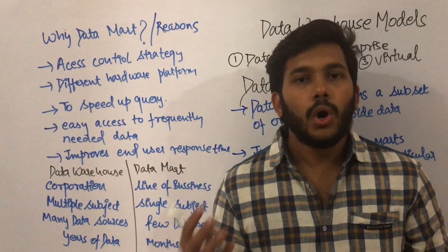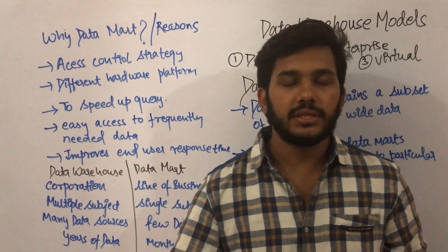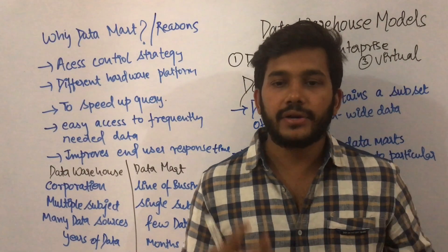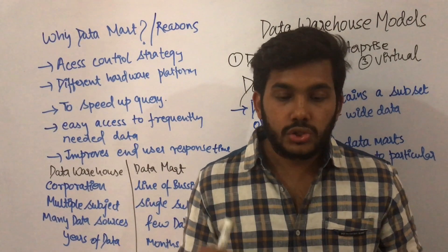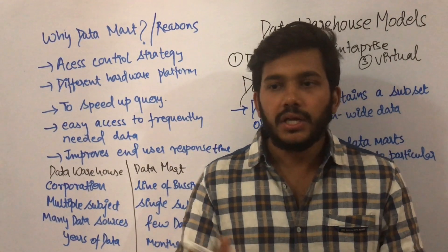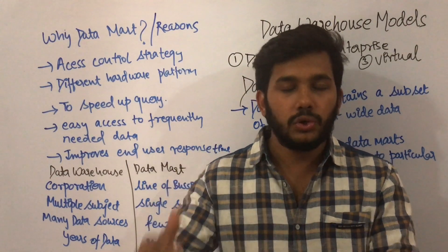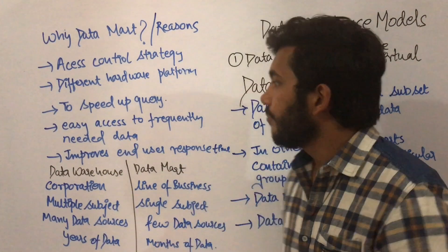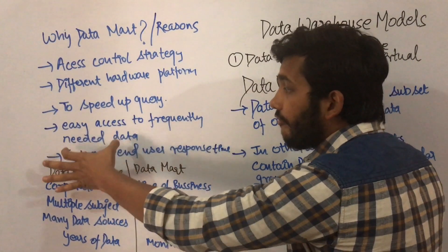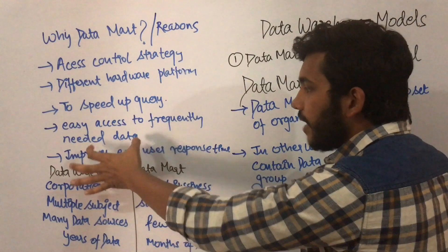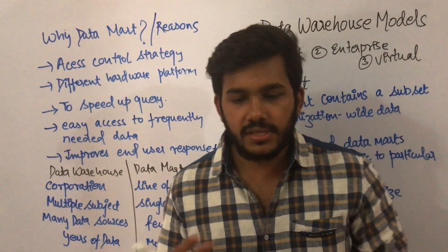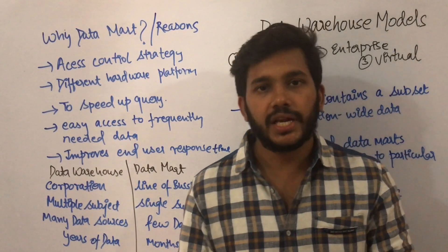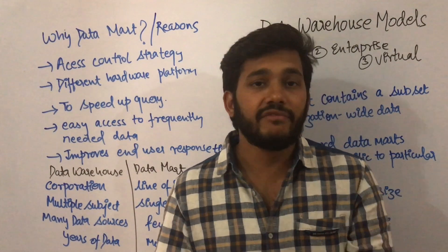The fourth reason is easy access to frequently needed data. Suppose I frequently need to know the total number of professors available in the computer science department on a regular basis. If I have a data mart with data of that particular subject, I can easily access that data in very little time. So easy access to frequently needed data improves end user response times, since in data mart the data is of a particular subject and the response to a query will be faster.